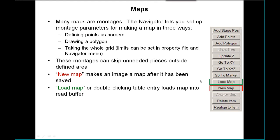Now there are issues about maps and how to make them. They are images the Navigator knows all about, and many maps are montages. The Navigator lets you set up montage parameters in three different ways: you can record corner points, draw a polygon on an image — in both cases it fits the montage at your current magnification to the defined area — or you can take a whole grid map, with limits set in the property file or defined by you to keep the stage within safe bounds.